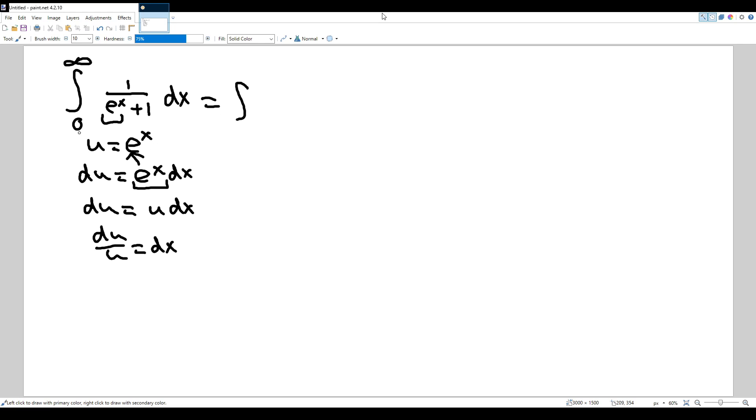So the first thing, the bounds go from x equals 0 to x equals infinity, and we have to change that to u as well. When you plug in 0 into e^x, this is the same as e^0, so e^0 is just 1. And when you plug in infinity into x, e^infinity is also infinity. And then we are going to change our integral. So e^x + 1 is just u + 1, and then times du over u.